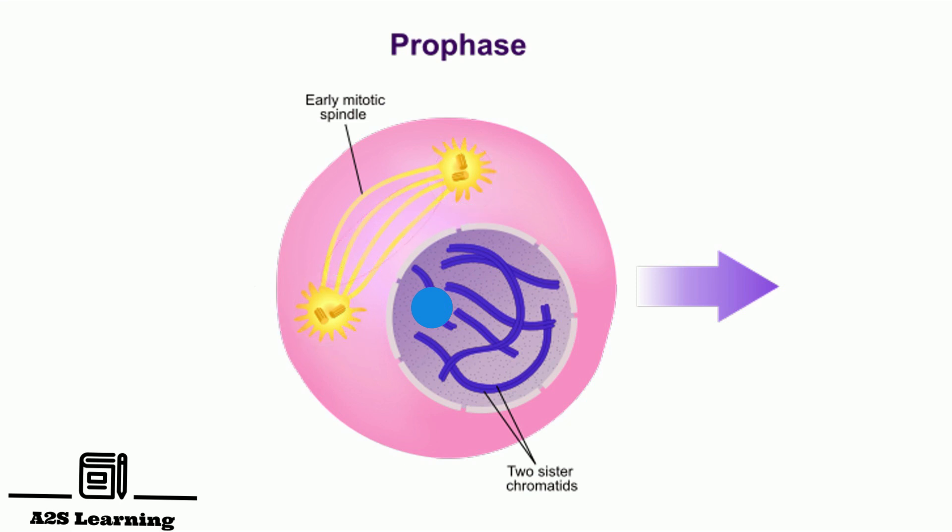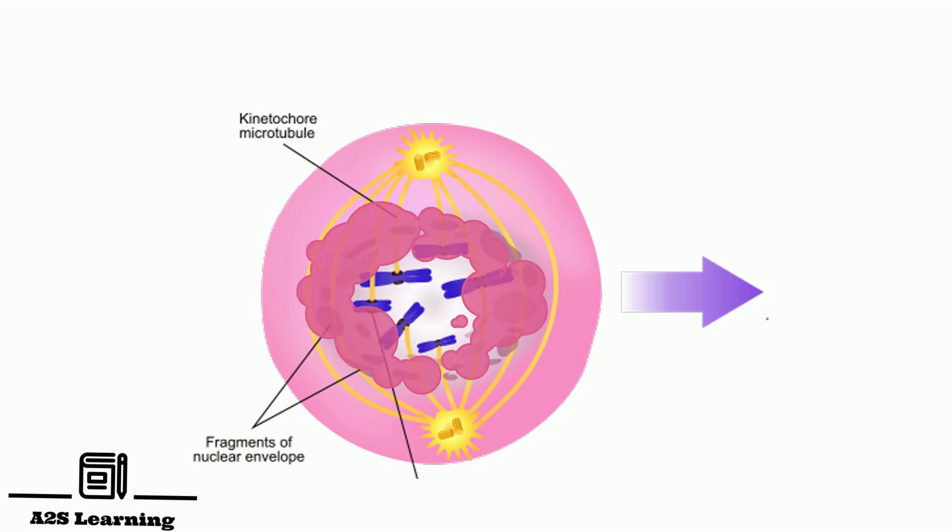At the end of prophase, nucleolus disappears and the nuclear envelope begins to disintegrate. Complete disintegration of the nuclear envelope marks the start of metaphase.